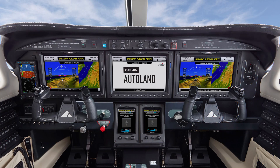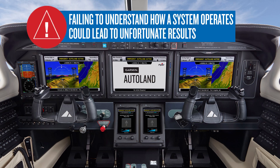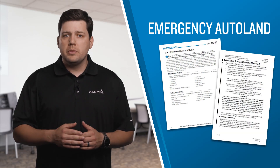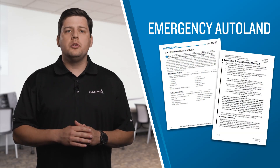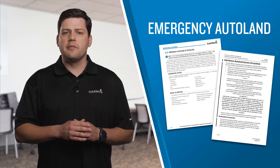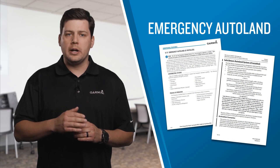Emergency Autoland is a highly capable system that has the potential to avoid undesirable outcomes in emergency situations. But just as with any system, failing to understand how it operates could lead to unfortunate results. We hope that this video has provided insight for operation of this advanced safety system, but keep in mind that features of the system will differ by aircraft model. You will still need to review the pilot's guide and AFM guidance for your aircraft to develop a full understanding of Emergency Autoland system behavior.